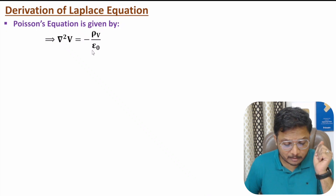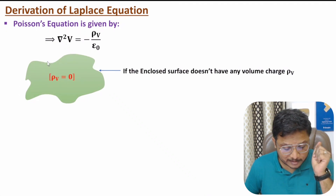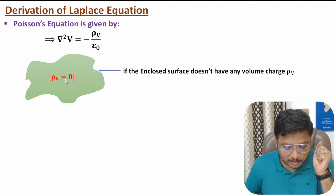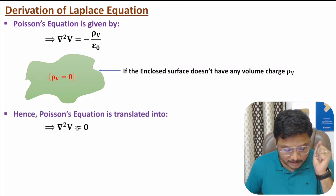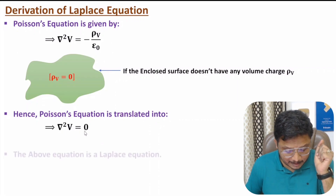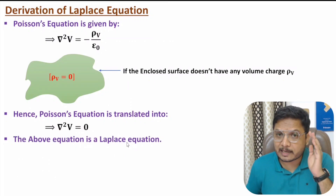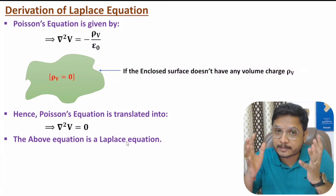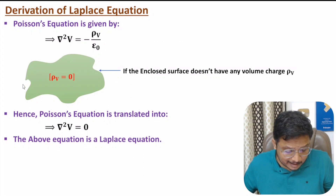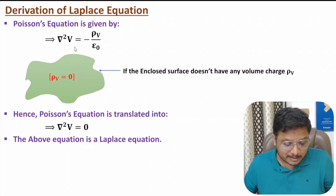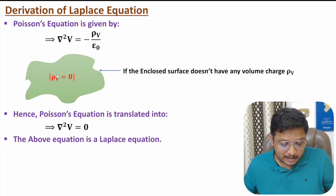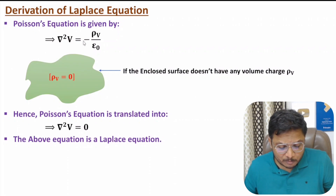Using Poisson's equation I will now derive Laplace's equation. Consider an enclosed surface that doesn't have any volume charge within it — meaning rho_v equals zero. Substituting rho_v = 0 into Poisson's equation gives del squared V equals zero. This is Laplace's equation, applicable to a source-free enclosed surface. If there is volume charge within the enclosed surface, we apply Poisson's equation.